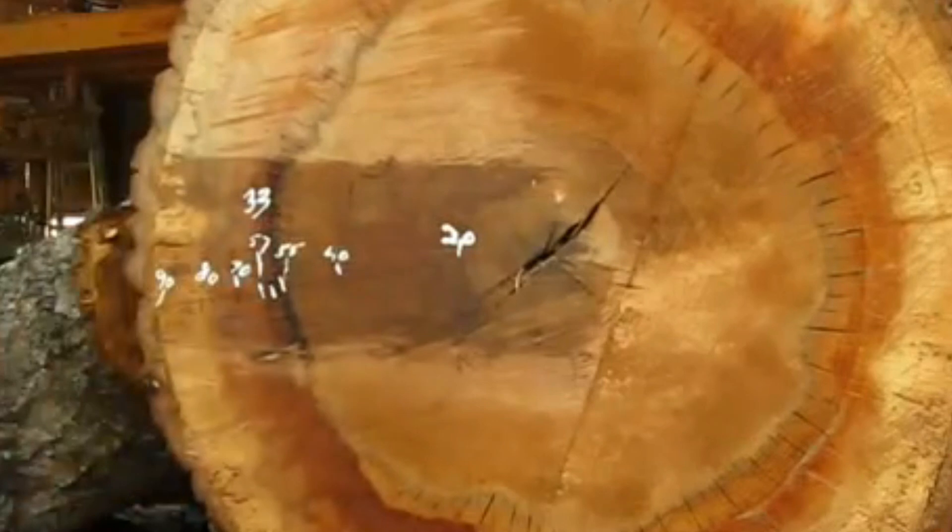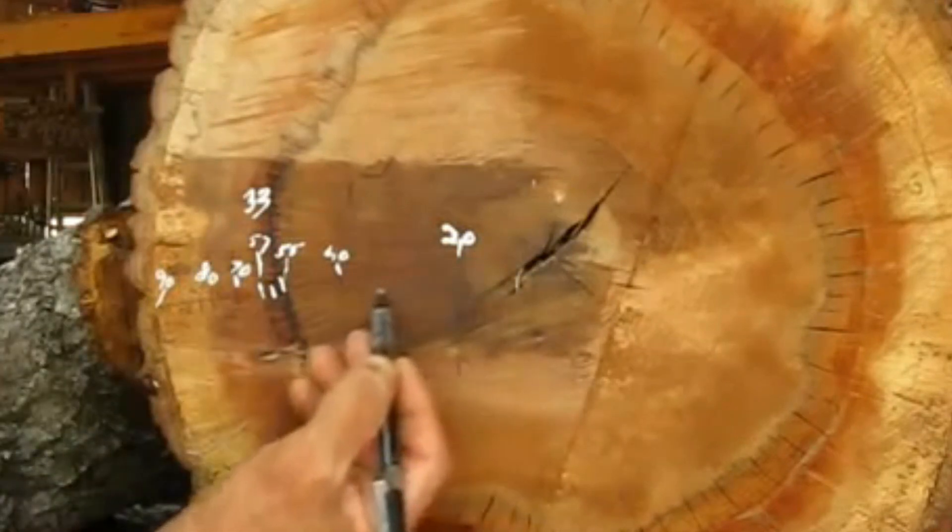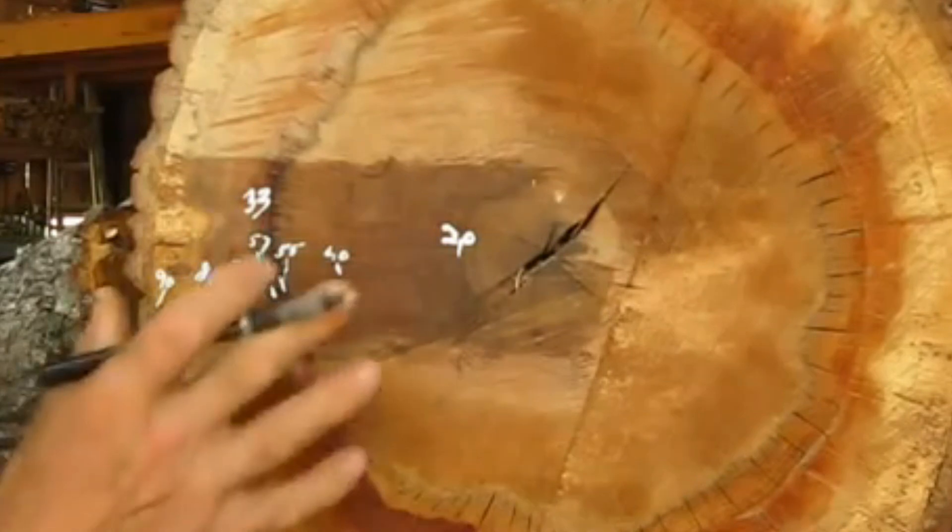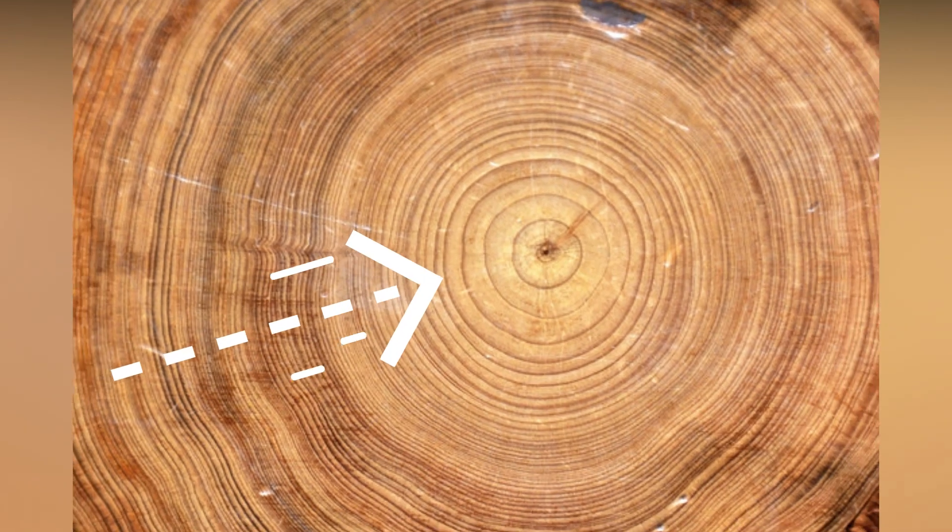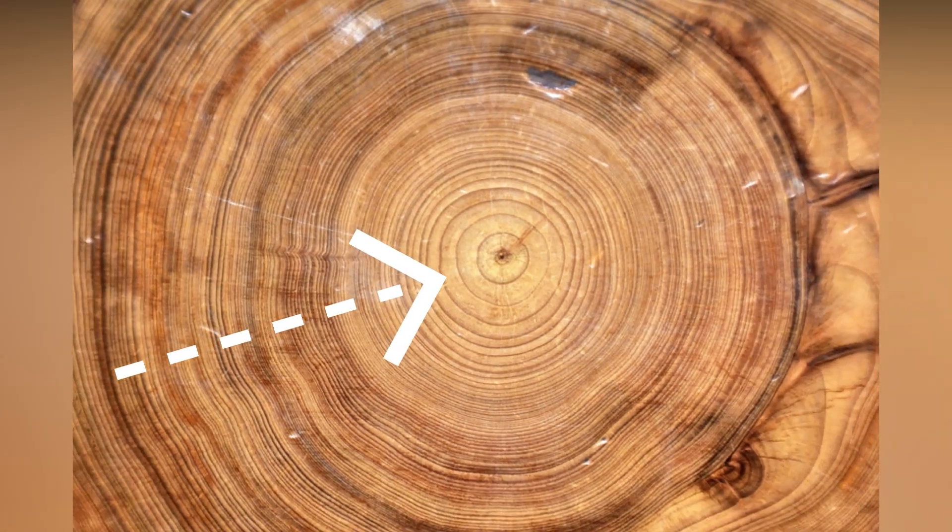Counting the rings can reveal the age of a tree. And one practical application of this is to determine how researchers can calculate the age of ancient structures by analyzing the pattern of tree rings present in the wood used in their construction.